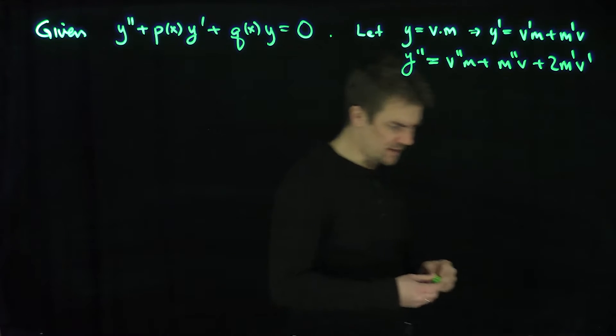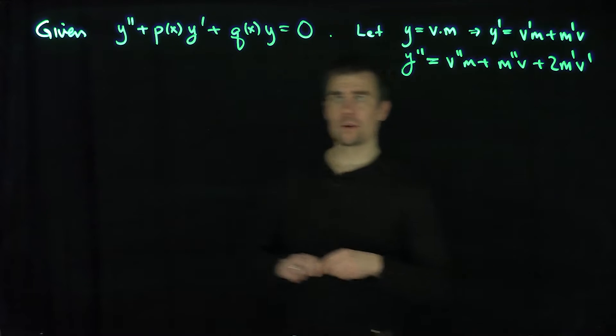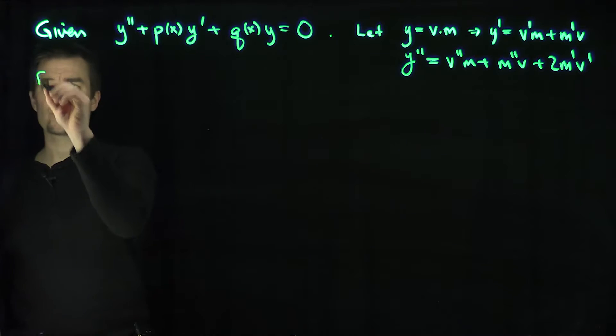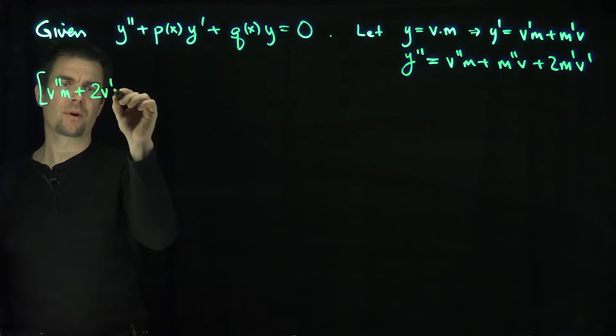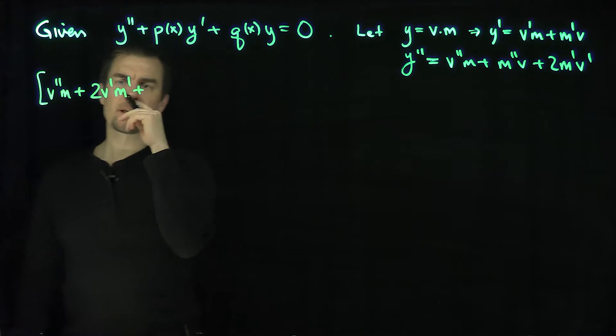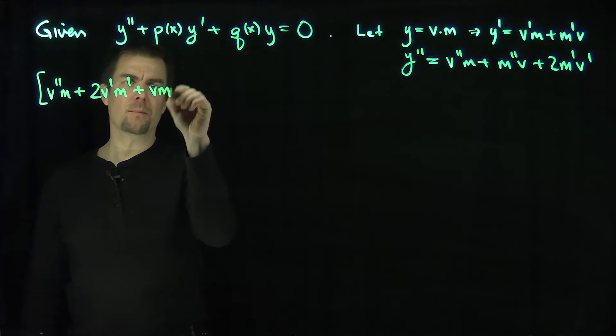And so let's fill this into the equation and see what we get. So if we do this, we're going to have this whole second-order equation. We're going to have a v double prime m plus a 2v prime m prime plus a v m double prime.